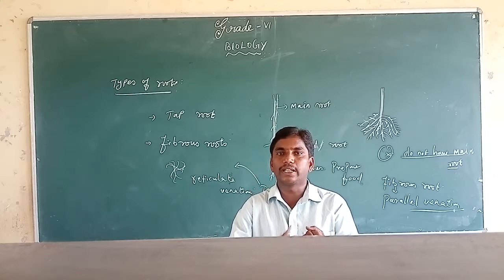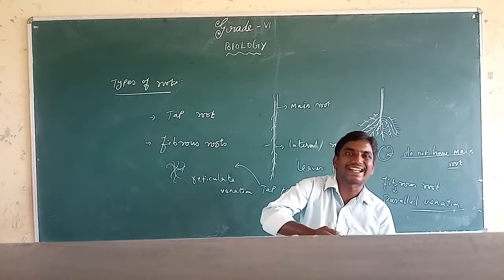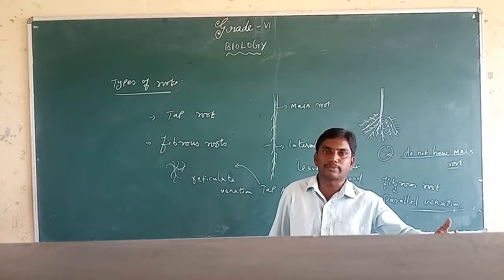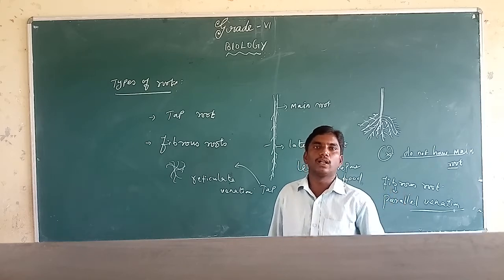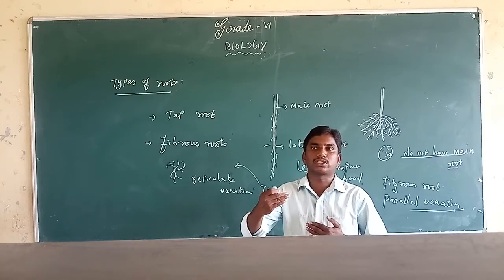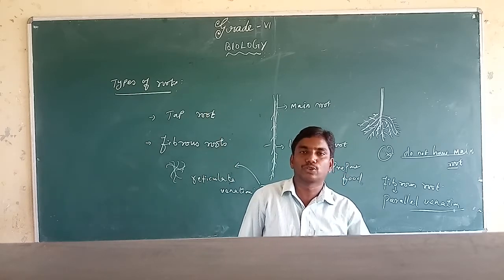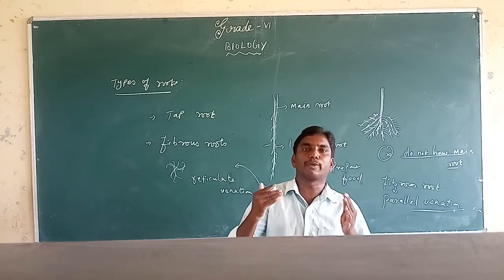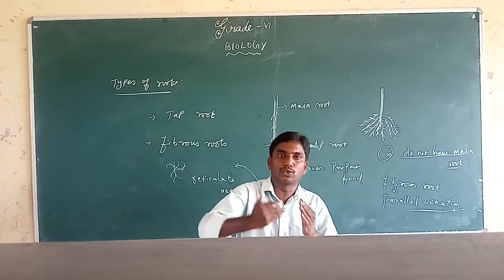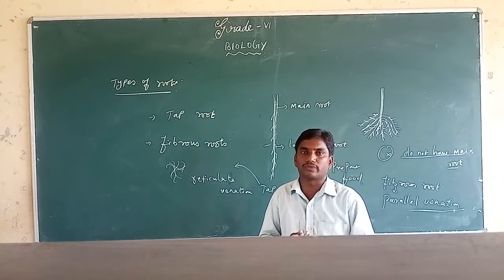So listen — the root always absorbs water and minerals from the soil. The stem conducts these to the leaves. The leaves prepare food through the process of photosynthesis using sunlight. The leaves can prepare their own food. The food travels through the stem and is stored in different parts of the plant.